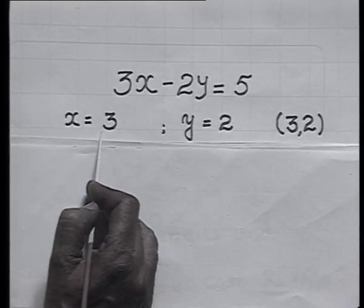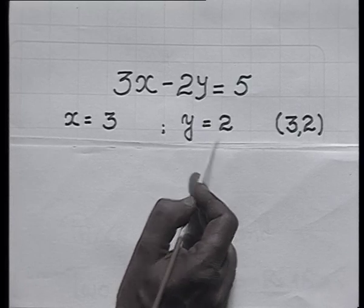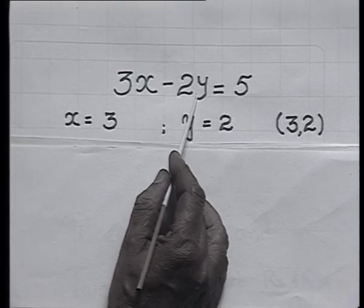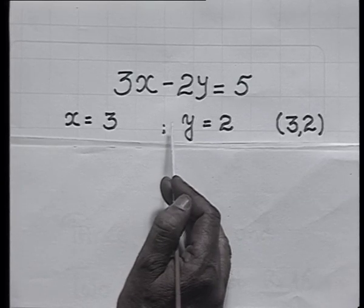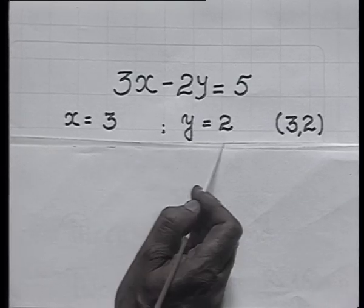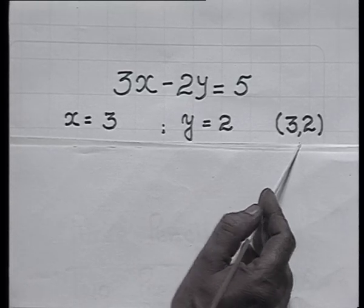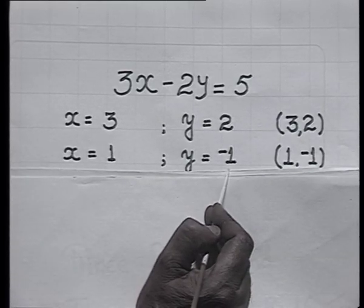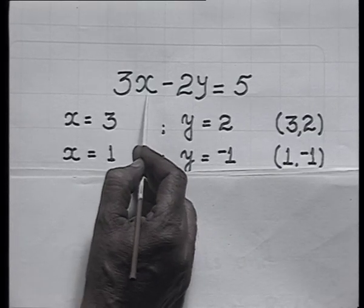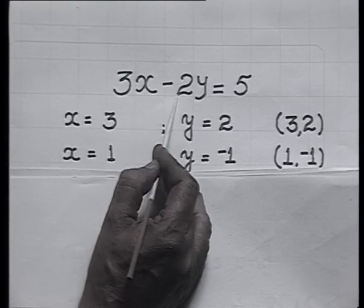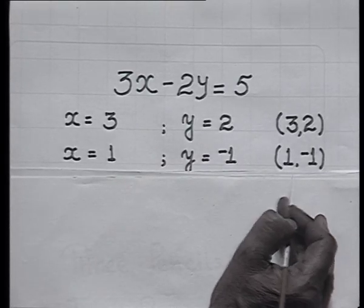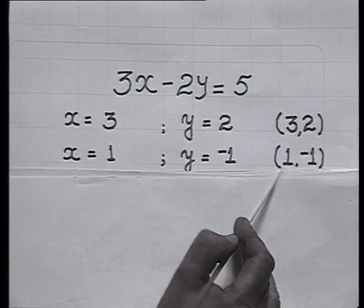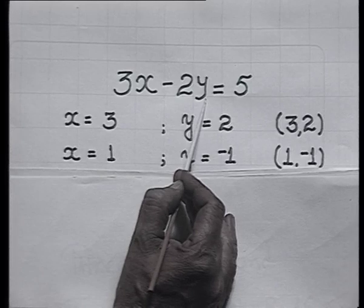Let us see some ordered pairs. When x is 3 and y is 2, both values satisfy the given equation, so the ordered pair is (3, 2). When x is 1 and y is minus 1: 3 times 1 minus 2 times minus 1 gives 3 plus 2 equals 5. So the ordered pair (1, minus 1) also converts this into a true statement and is also a solution.